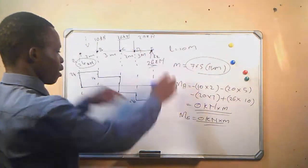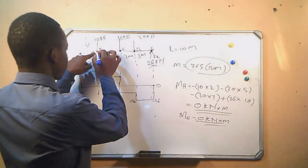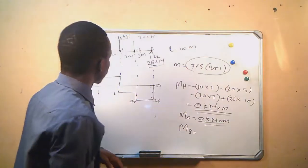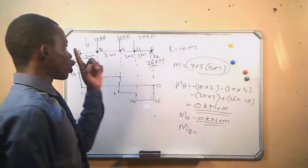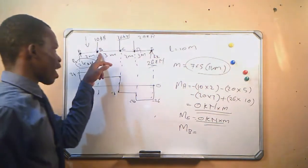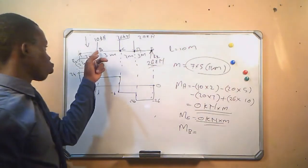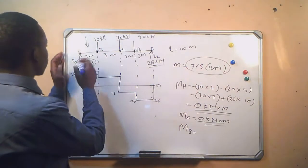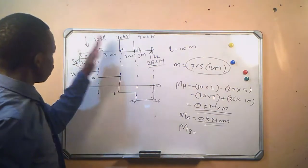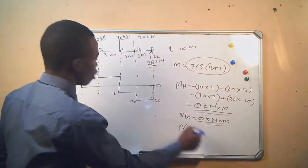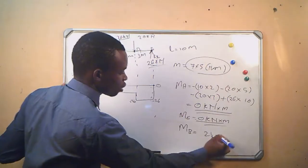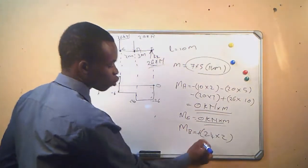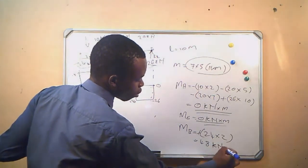Now we want the bending moment at B. We choose the less complex side. On the left side we only have one force, so we use the left-hand side. The force is 24 kilonewtons, the direction is positive because it is going up, and the distance is 2. So 24 times 2 equals 48 kilonewton-meters.